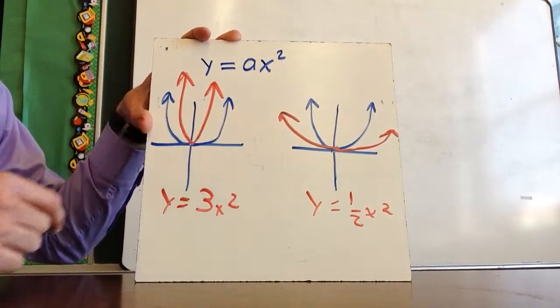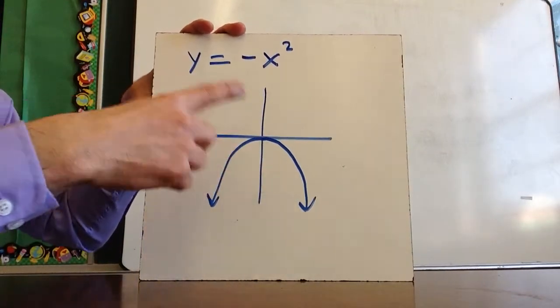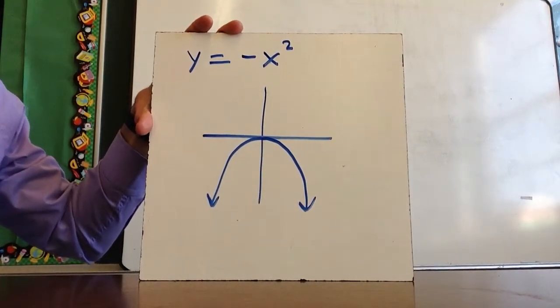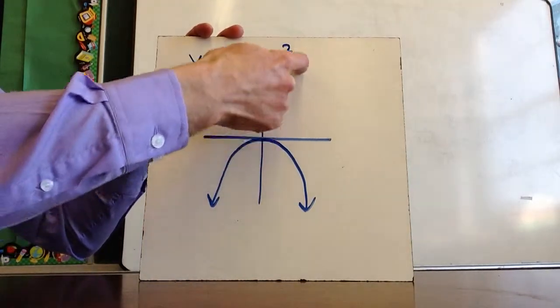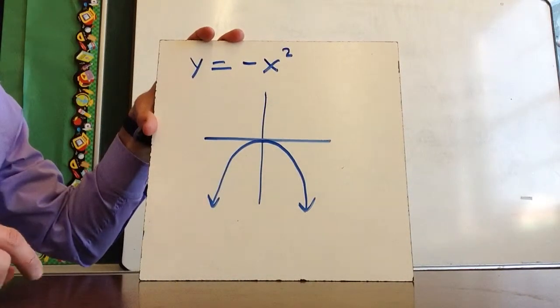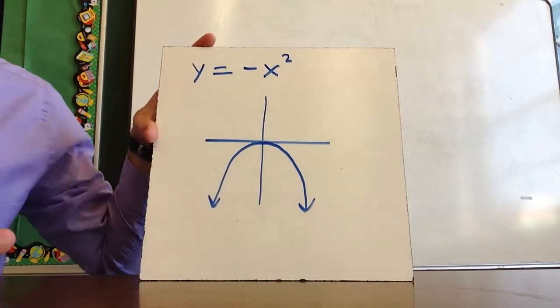Keep in mind what happens when you change a. The last thing we should talk about is what happens when it becomes a negative in front of x². That essentially flips the graph upside down. So x² would have been facing up, and -x² makes it flip to go down.